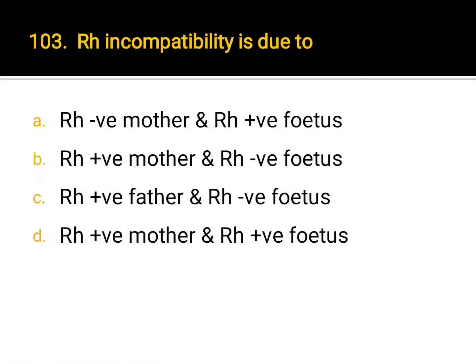Rh incompatibility is due to: A. Rh negative mother and Rh positive fetus, B. Rh positive mother and Rh negative fetus, C. Rh positive father and Rh negative fetus, D. Rh positive mother and Rh positive fetus. Correct answer: A. Rh negative mother and Rh positive fetus.